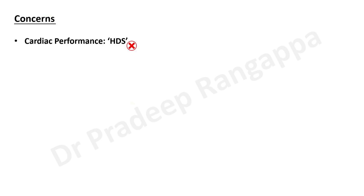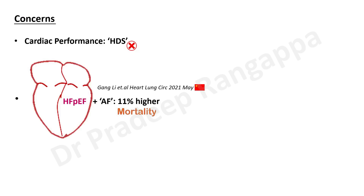Is AF relevant and concerning in ICU? Yes - it causes significant hemodynamic instability. There are two major concerns: cardiac performance gets affected, making patients more hemodynamically unstable, and there is risk of thromboembolism. When anyone develops AF in ICU, vasopressor doses increase, acidosis worsens, and tissue hypoperfusion occurs. In patients with heart failure with preserved ejection fraction, a concomitant AF increases mortality risk by 11%.